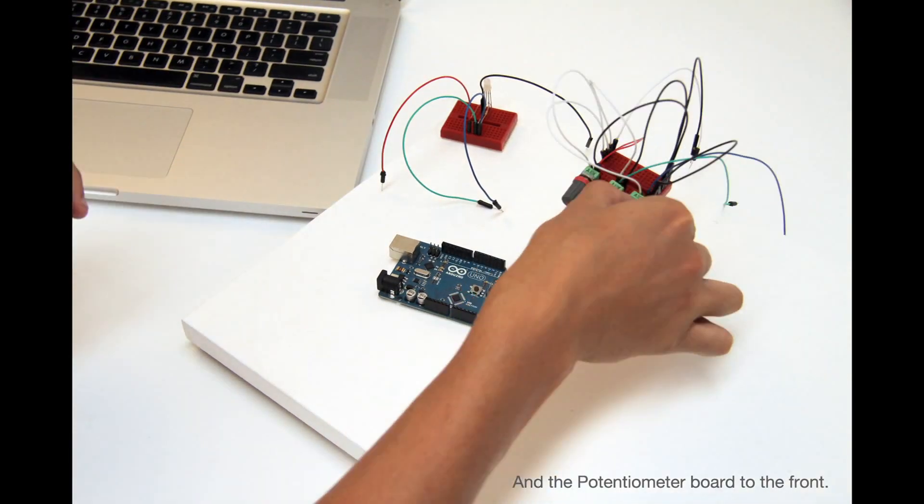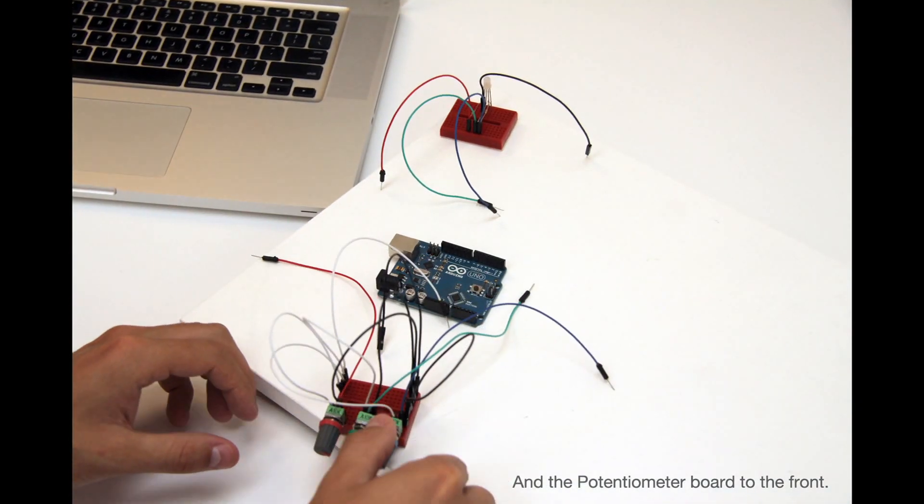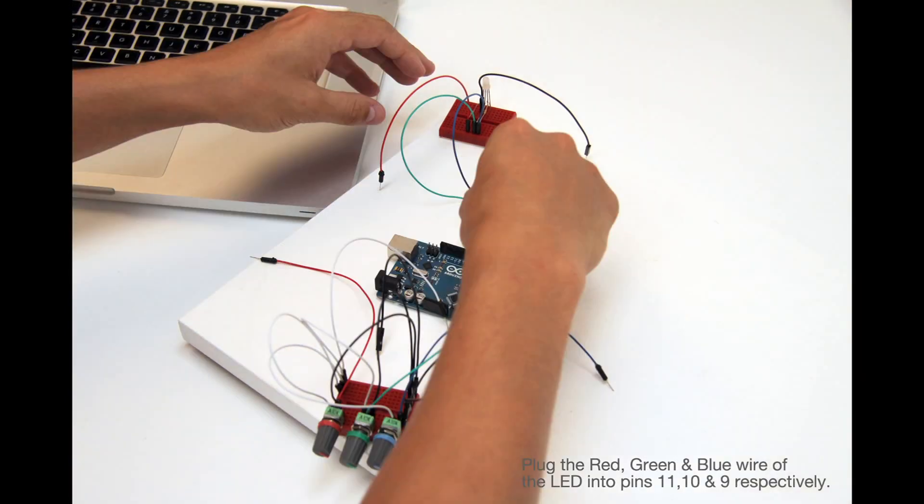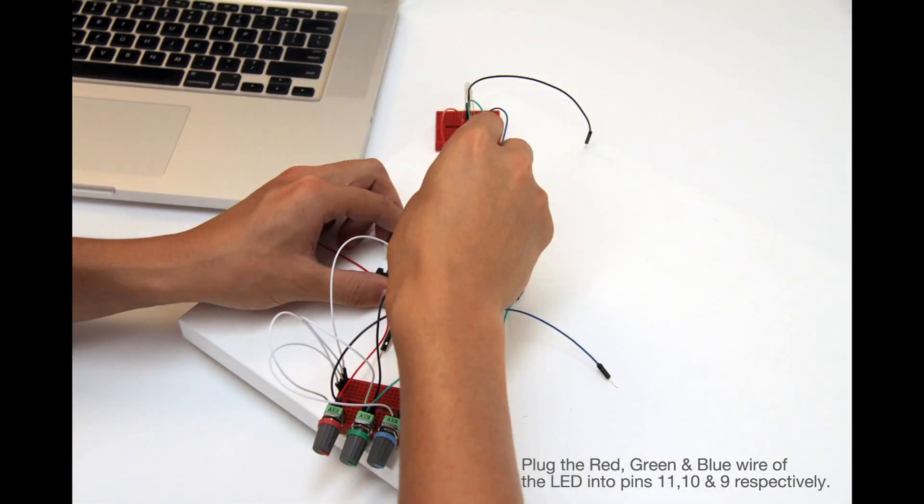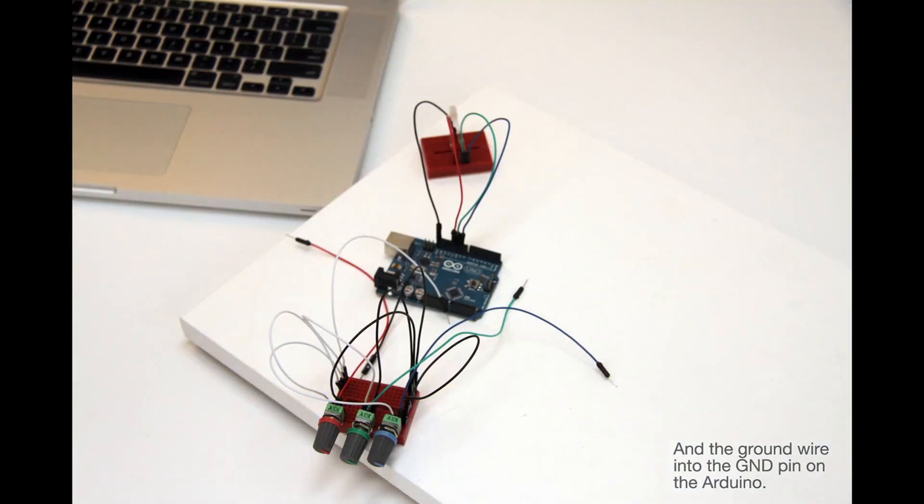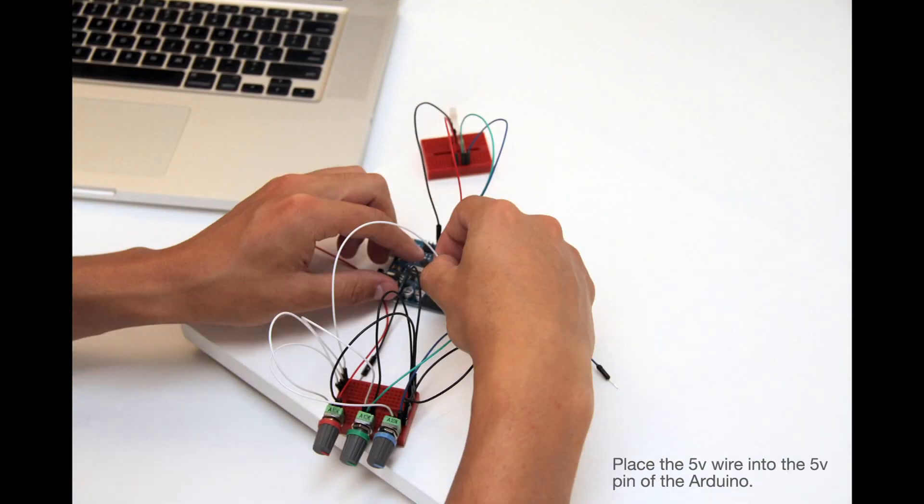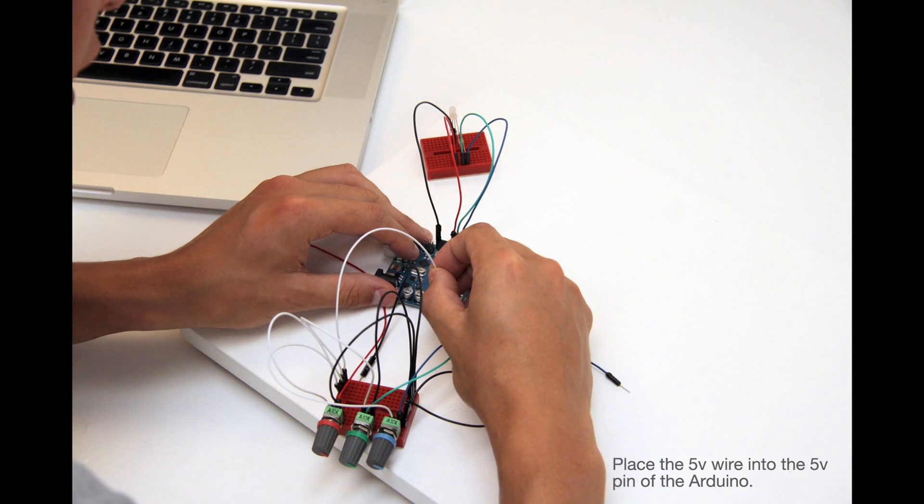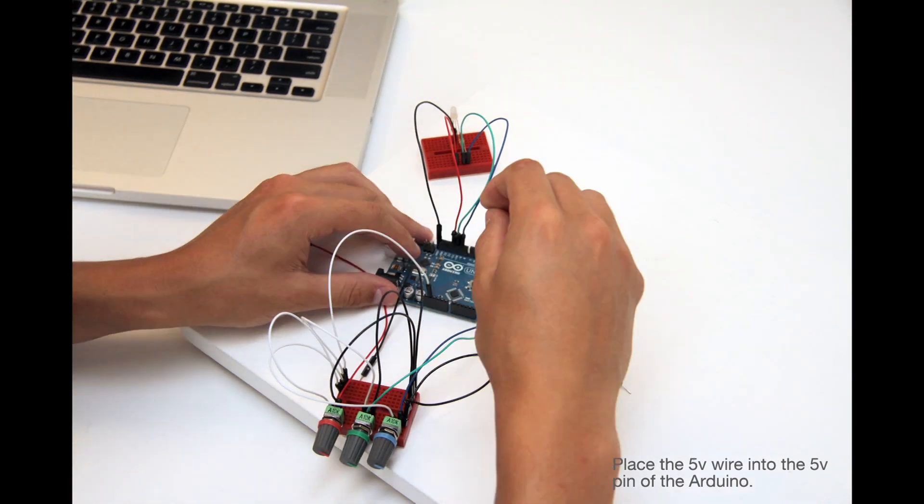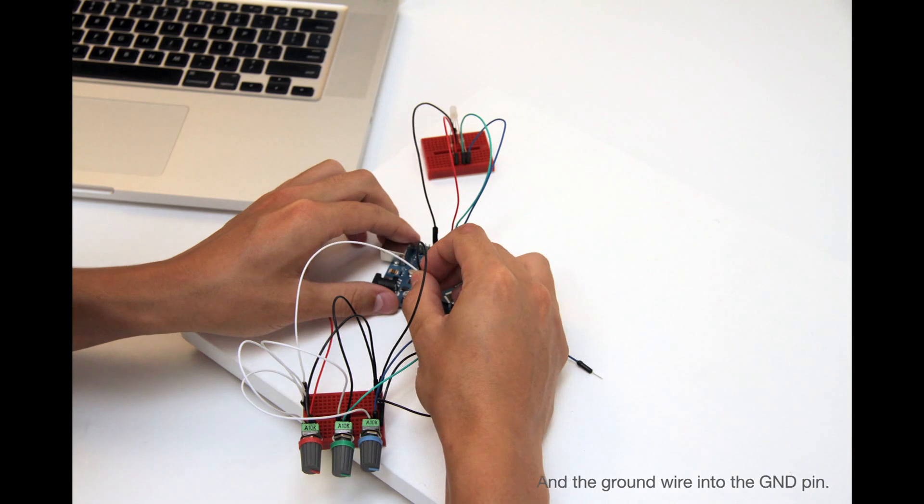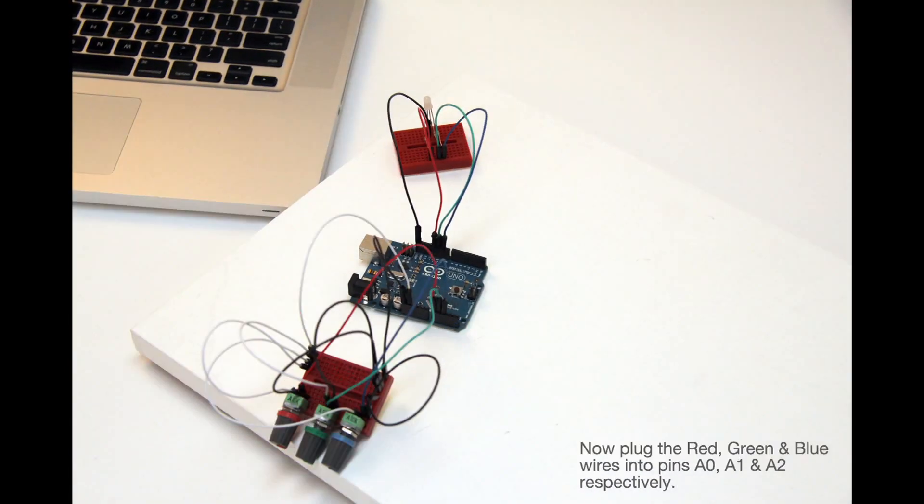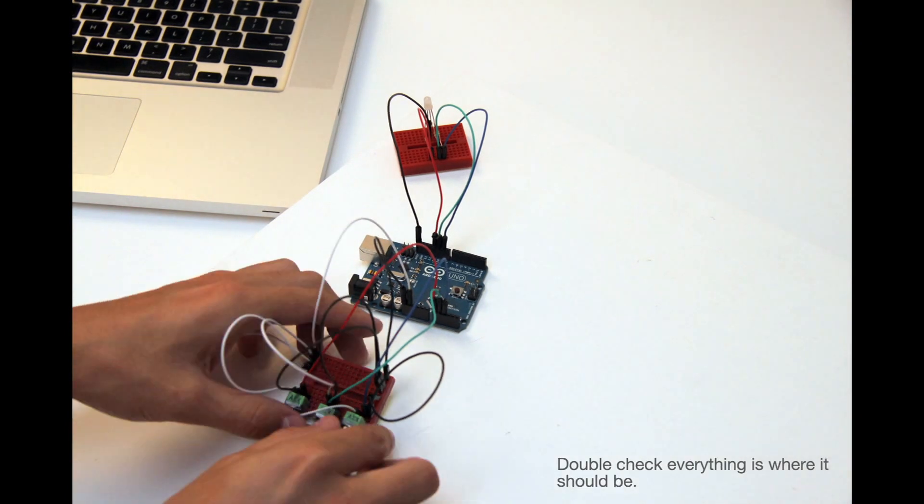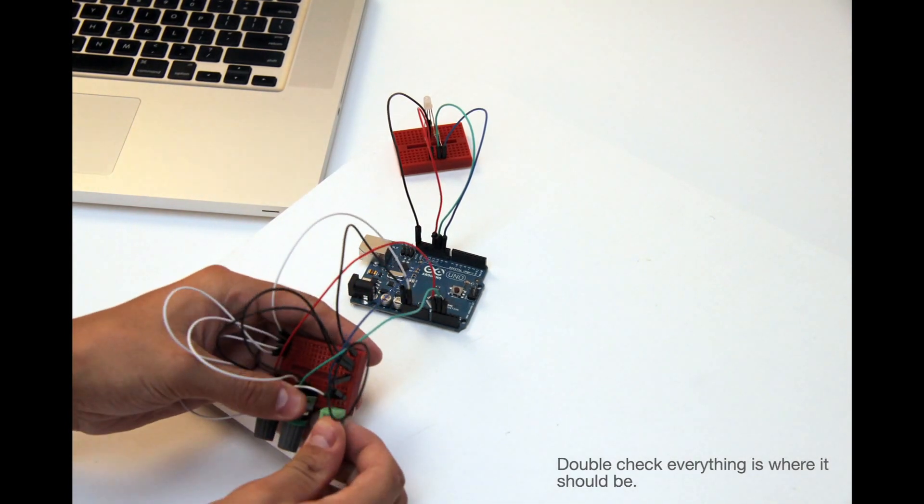Now for the LED board and the potentiometer board to come together. Connect the RGB wires into pins 11, 10 and 9 and the ground into ground. Now put the 5 volt of the potentiometer into 5 volt and the ground into ground. Grab the signal cables and place them in A0, A1 and A2.